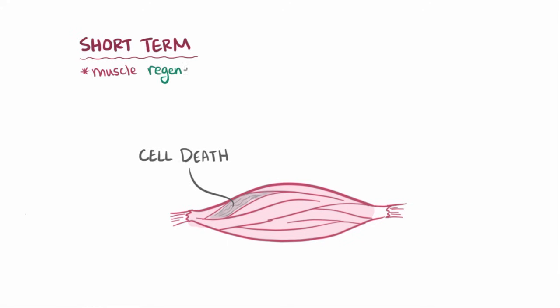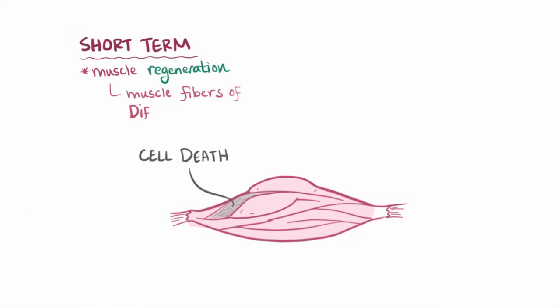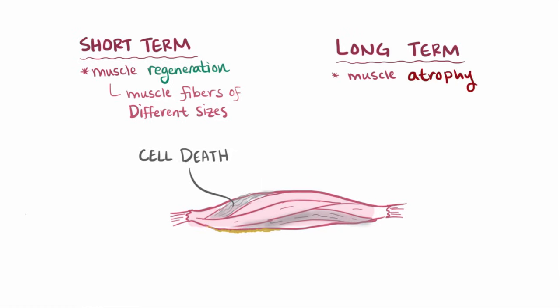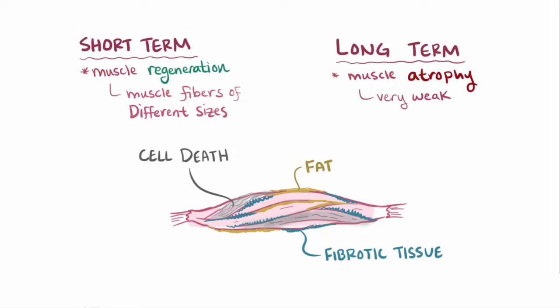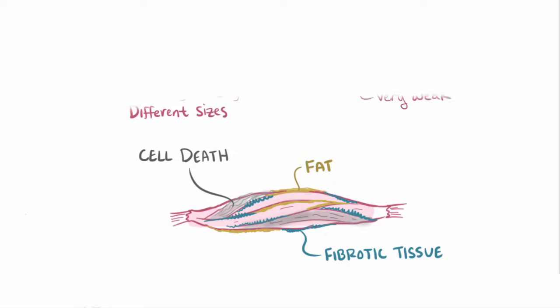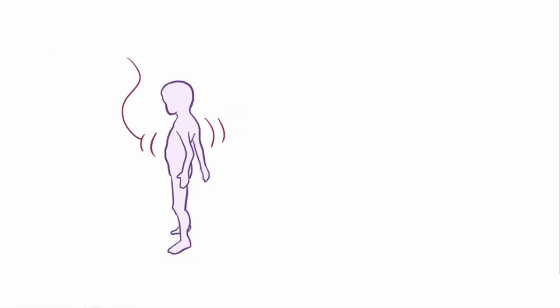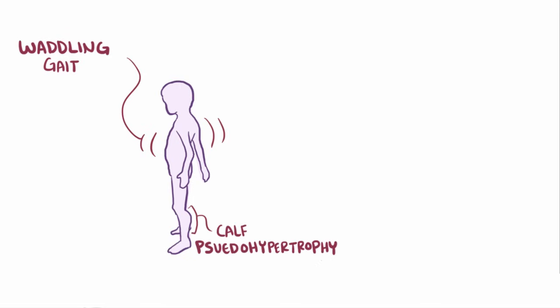In the short term, there's muscle regeneration, resulting in muscle fibers of different sizes, but in the long term the muscles atrophy and are infiltrated by fat and fibrotic tissue, leaving them really weak. This process is particularly noticeable in the legs, and children with Duchenne muscular dystrophy begin to walk later in childhood, develop a waddling gait, and tend to develop calf pseudohypertrophy — visibly enlarged calves that are enlarged because of fat and fibrotic tissue rather than muscle tissue.